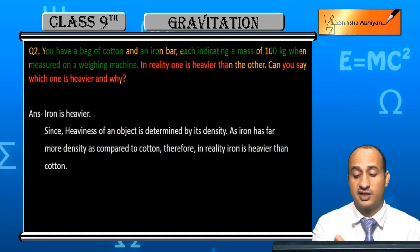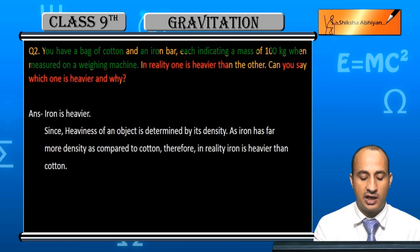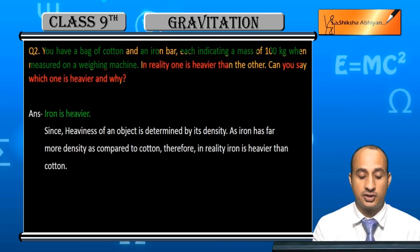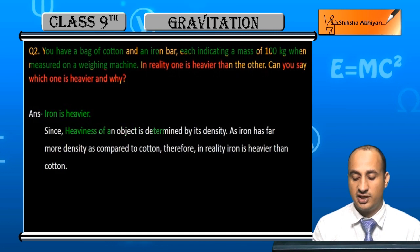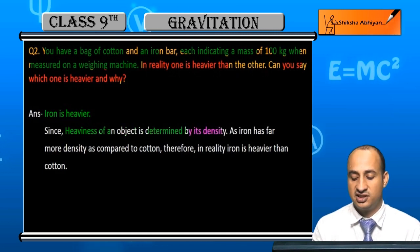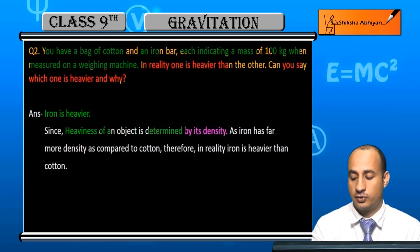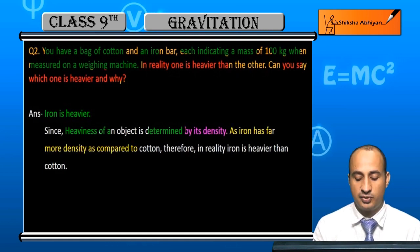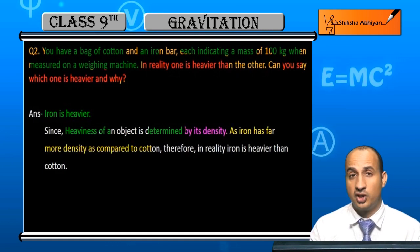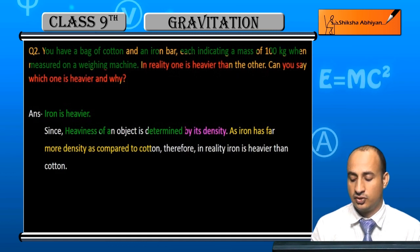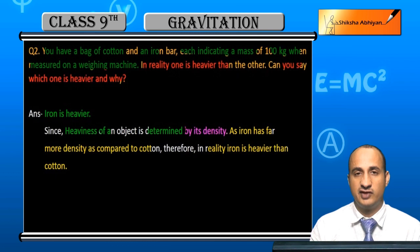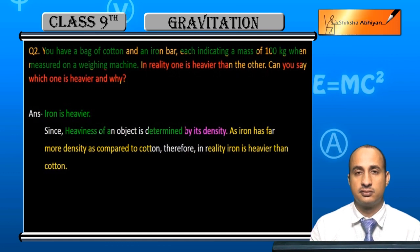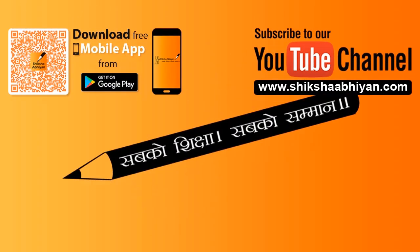Iron is heavier, because the heaviness of an object is determined by its density. As iron has far more density compared to cotton, iron is heavier than cotton.